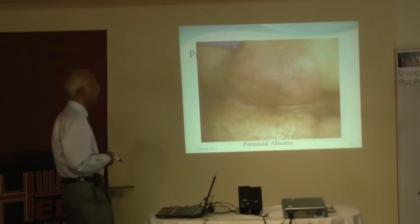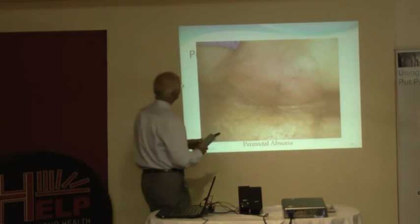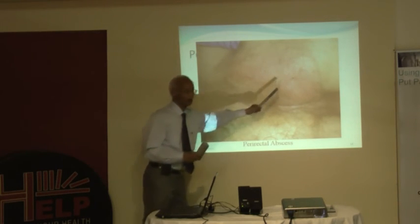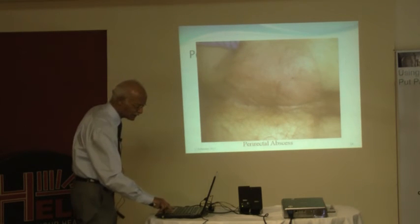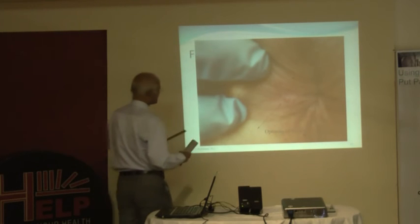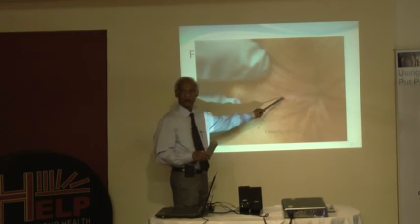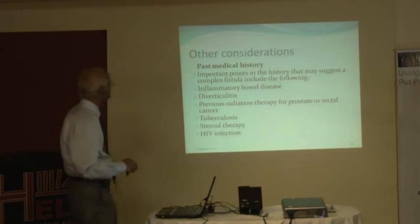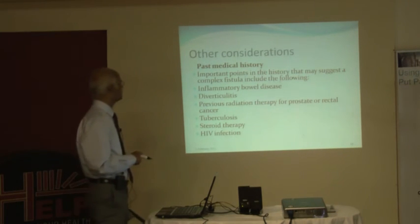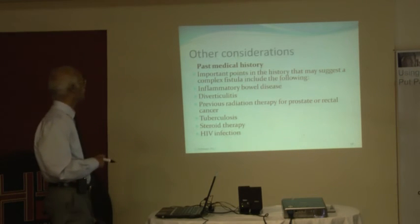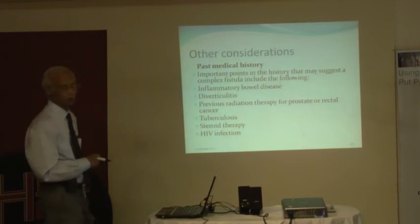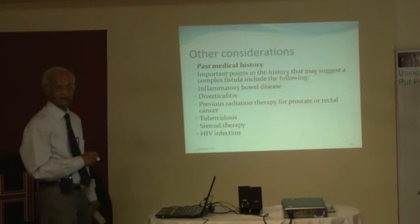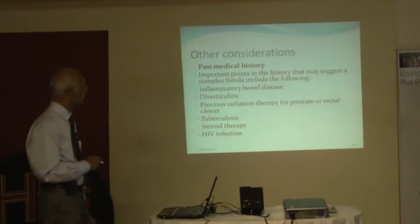This is also a picture showing a perirectal abscess. This is the perirectal abscess — this is the normal side of the buttock and this is the inflamed area. This is the external opening of the fistula. Risk factors include inflammatory bowel disease like Crohn's disease, ulcerative colitis, diverticulitis, previous radiation therapy for prostate or rectal cancer, tuberculosis, steroid therapy, and HIV infection.